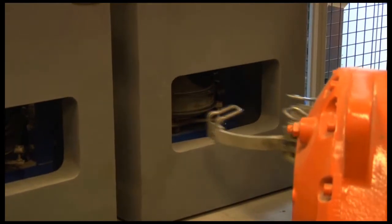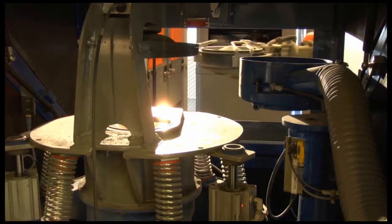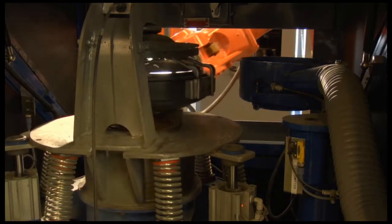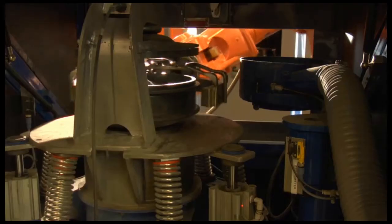From the splitter in the coarse preparation cell, a sample portion is discharged directly into a grinding bowl in the pulverizing cell. Here, it is pulverized in one of the six large-capacity mills.